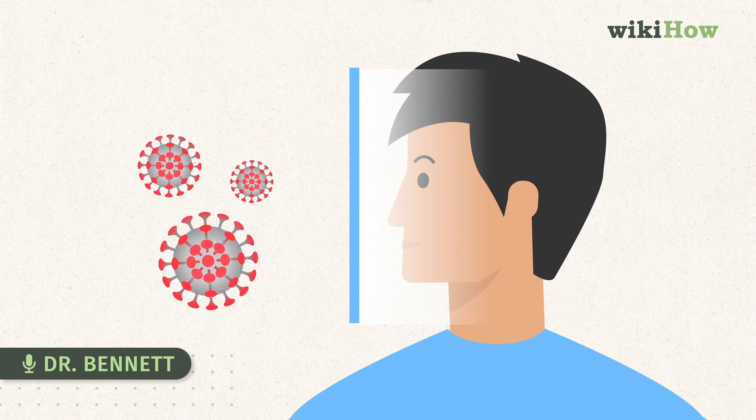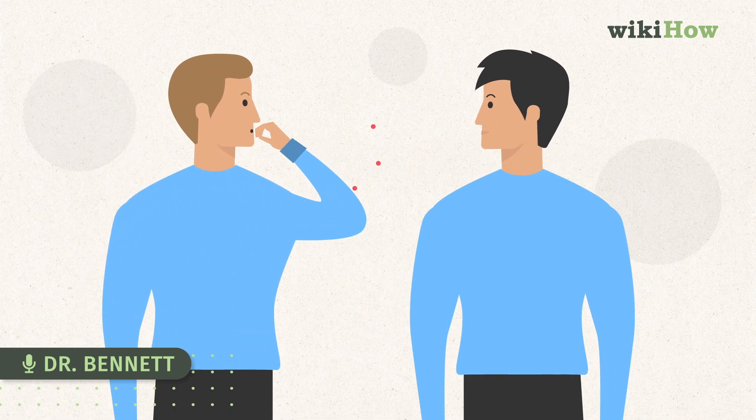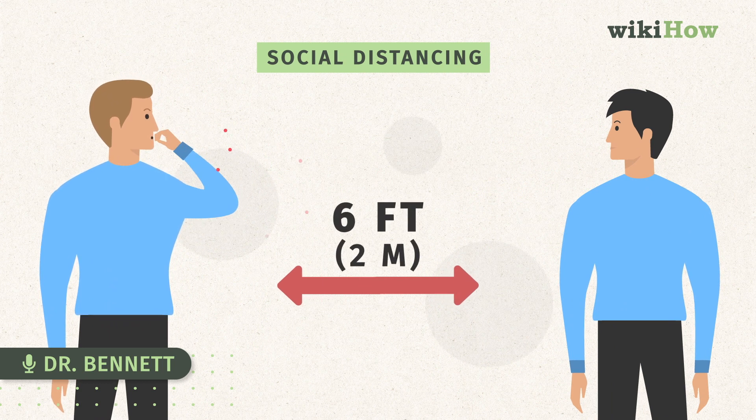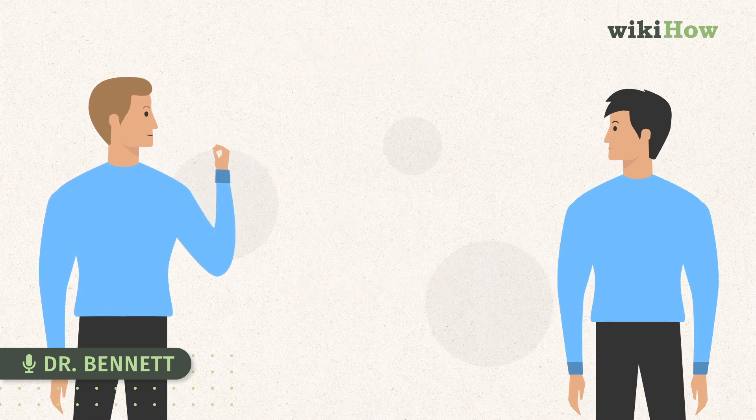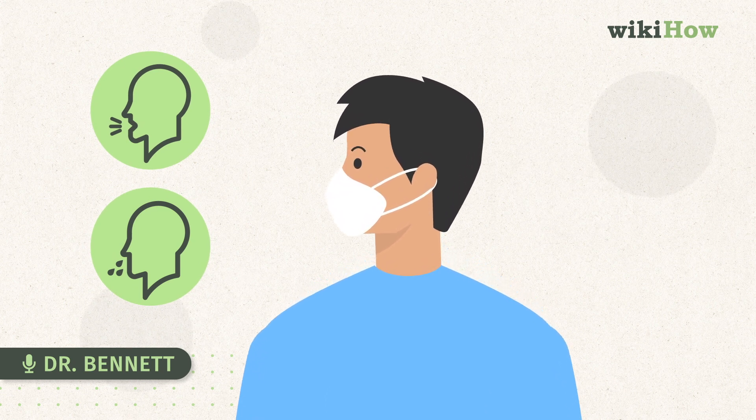This might mean, for example, avoiding people that are coughing or spraying droplets. This is why social distancing is so very important, especially if you yourself might be sick and potentially distributing virus through coughing or sneezing.